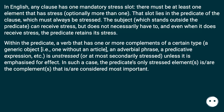Within the predicate, a verb that has one or more complements of a certain type — a generic object (i.e., one without an article), an adverbial phrase, a predicative expression, etc. — is unstressed, or at most secondarily stressed, unless it is emphasized for effect. In such a case, the predicate's only stressed elements are the complements that are considered most important.